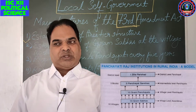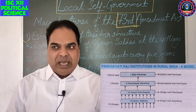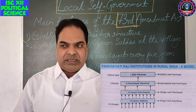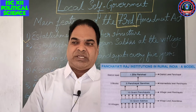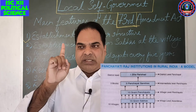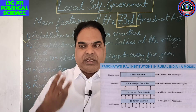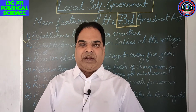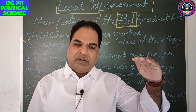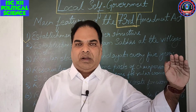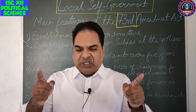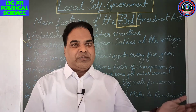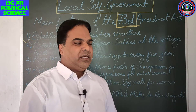The first feature is the three-tier structure. At the bottom level there will be 10 grams and 10 gram panchayats. Just above that will be three panchayat samitis, and above that will be Jila Parishat. That means under one Jila Parishat, three blocks will be there, and under these three blocks, 10 gram panchayats. So the three levels are: village level, block level, and district level.